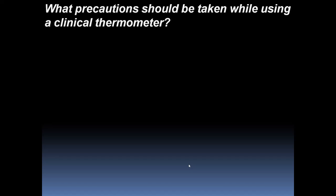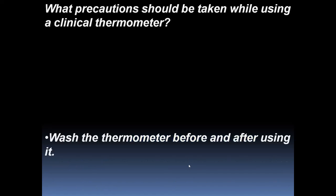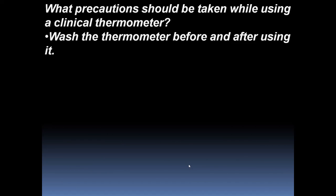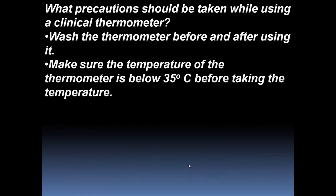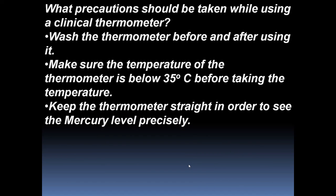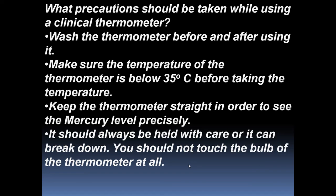We need to take some precautions while using the clinical thermometer. Wash the thermometer before and after using it. Make sure the temperature of the thermometer is below 35 degrees Celsius before taking a reading. Keep the thermometer straight in order to see the mercury level precisely. It should always be held with care, as it can break. You should not touch the bulb of the thermometer at all.